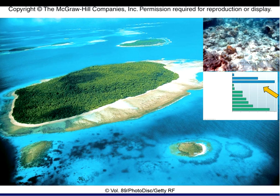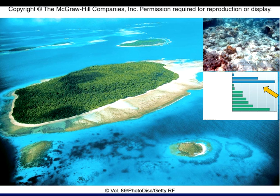Coral reefs are among the best known marine ecosystems because of their extraordinary biological productivity and their diverse and beautiful organisms. Reefs are aggregations of minute colonial animals — the coral polyps — that live symbiotically with photosynthetic algae, which are the dinoflagellates. Calcium-rich coral skeletons build up to make these reefs, and in some cases they actually build atolls and islands. Reefs protect shorelines and shelter countless species of fish, worms, crustaceans, and other life forms.